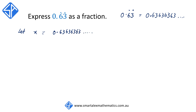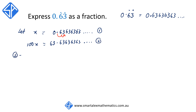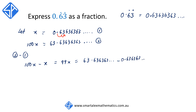Instead of multiplying x by 10 like the first question, this time we're going to multiply x by 100. So we have 100x is equal to — remember, multiplying by 100 simply means that we move the decimal point two places to the right — so we're going to get 63.63636363. Calling them equations 1 and 2, we're going to subtract equation 1 from equation 2, so 100x take away x is equal to 99x.